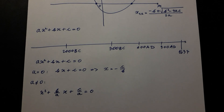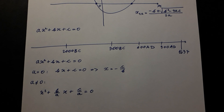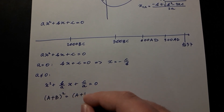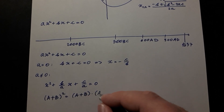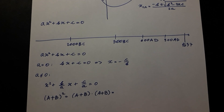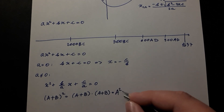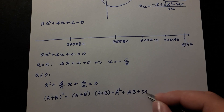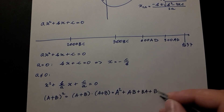Our goal is to isolate x. We have terms with x squared and x, which makes that goal hard but not impossible. We can use the technique of completing the square to overcome this obstacle. A perfect square is as follows: (a plus b) squared equals (a plus b)(a plus b), which expands to a squared plus ab plus ba plus b squared.